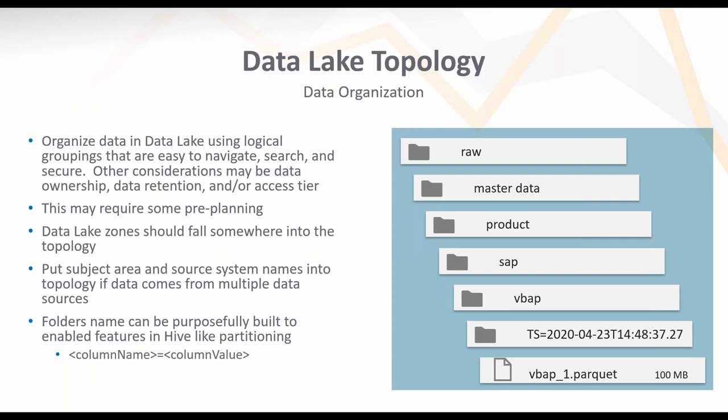Within the data lake zones, we need to set up the topology for the organization to be successful. We want to organize data using logical groupings that are easy to navigate, search, and secure. Considerations include data ownership, retention policy, and access. For example, in the raw data zone you might have a master data folder, with a products subfolder, an SAP source system folder, and a table like BBAP, with snapshots of the different versions of data brought in.